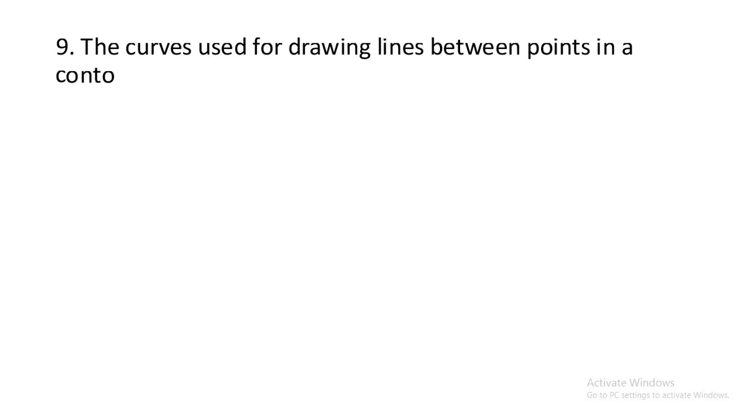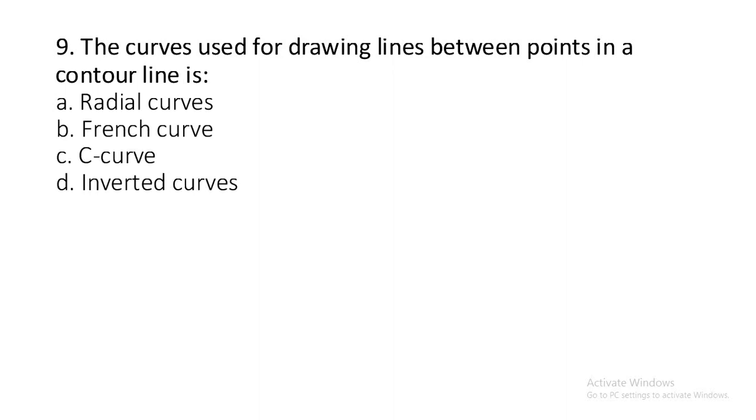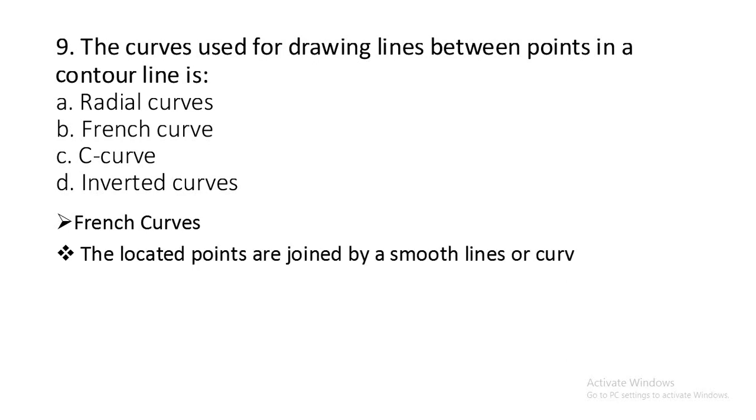Before moving to question number nine, if you think we are doing a great job, good job, or at least an okay job, then please like, comment, and subscribe our YouTube channel. Also share this video to your civil engineering friends so that everyone will be benefited. Question number nine: The curves used for drawing lines between points in a contour line is radial curves, French curve, C curve, or inverted curves? French curves. French curves are the curves used for drawing lines between two points. The located points are joined by smooth lines or curves called French curves.